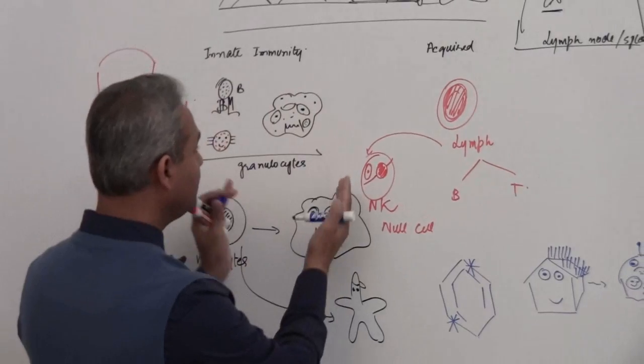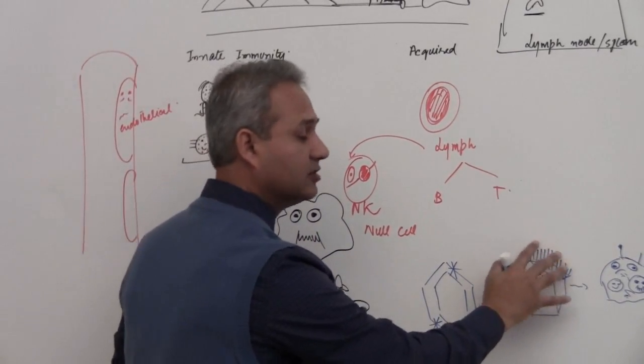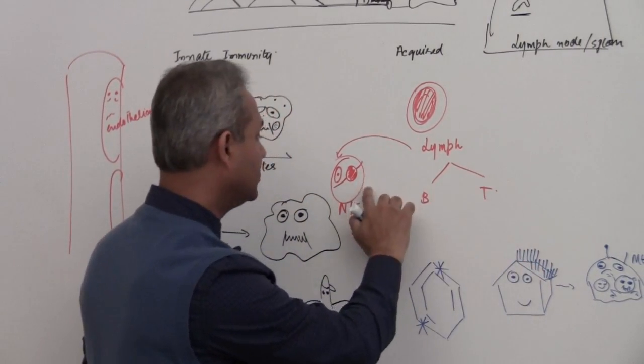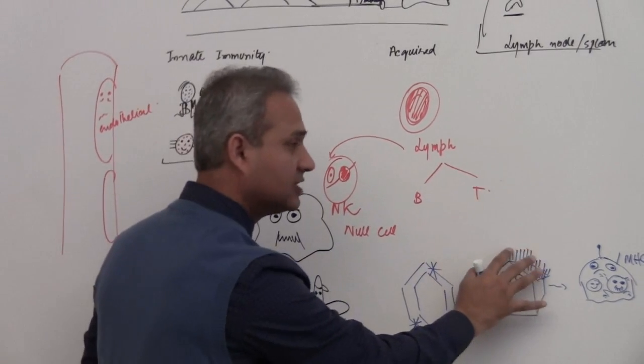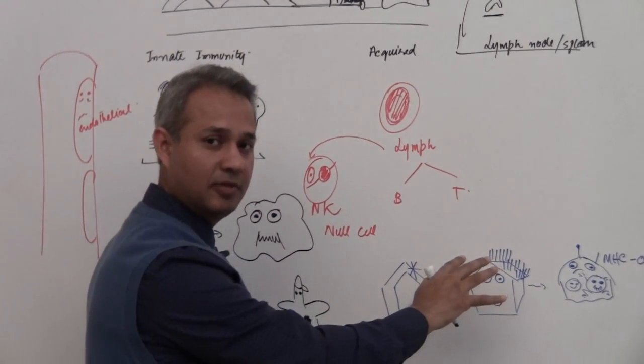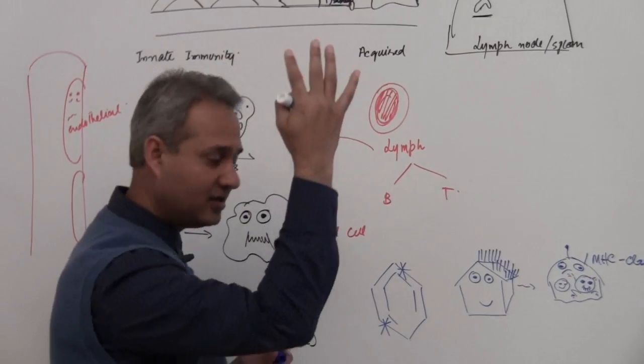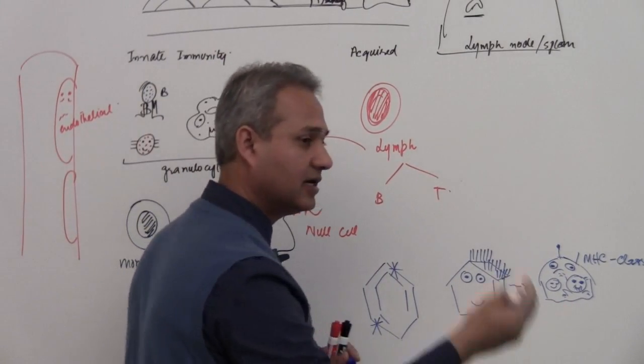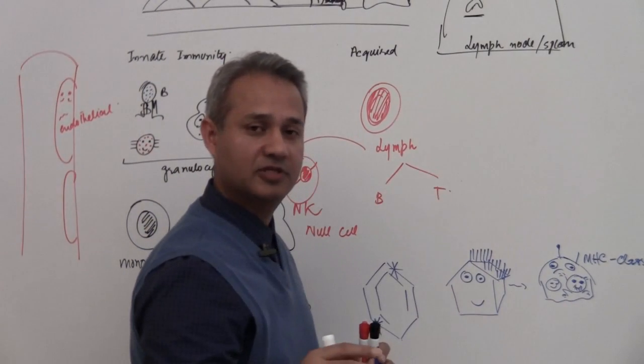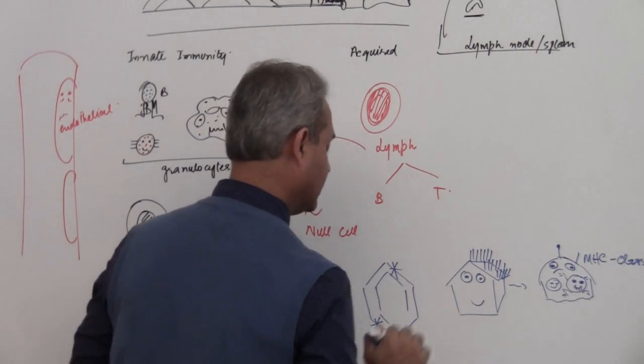So when the innate immune system would feel this cell, remember we talked about natural killer, he does especially, he would feel this and say well, he has proper amount of MHC on it, he has hair, he is fine. But this guy, well he does not have enough MHCs on it and he is then going to take care of it.